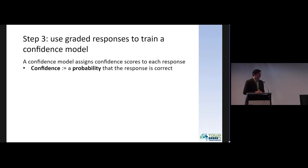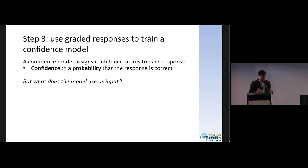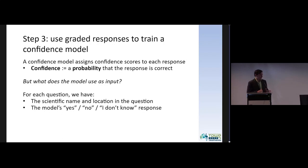The third step was to take all this labeled information about whether ChatGPT was correct or wrong, and train a confidence model to predict future cases where its responses might be correct or incorrect. We define a confidence model as something that assigns confidence scores to each response, where a confidence score is the probability that the response is correct. For each question we have a scientific name, a location, and the model's response — usually one word: yes, no, or I don't know.